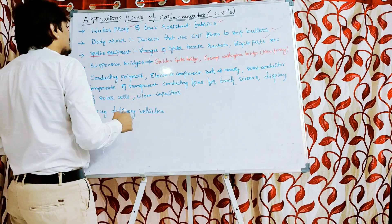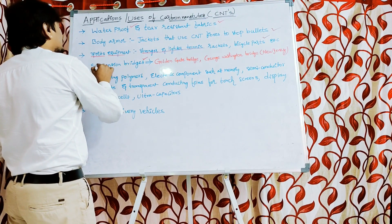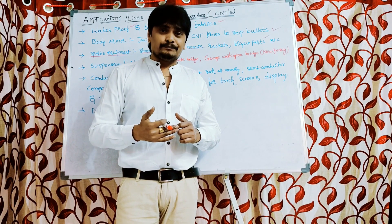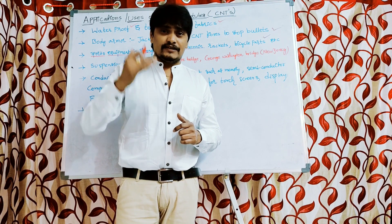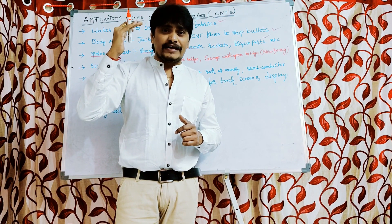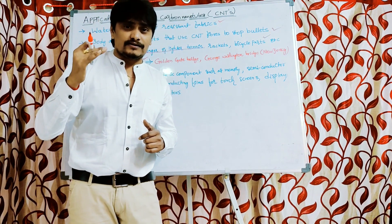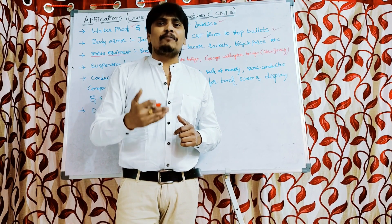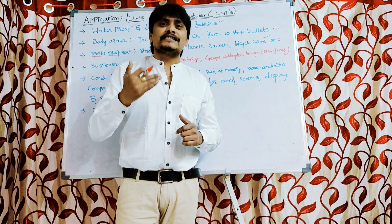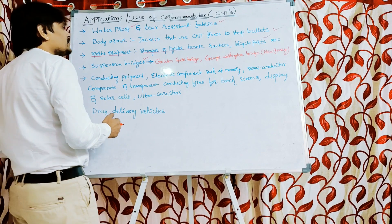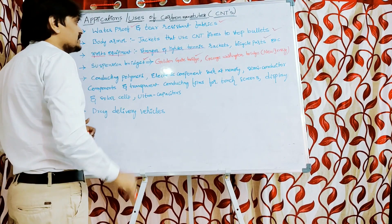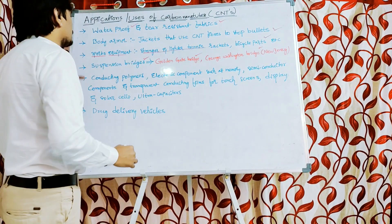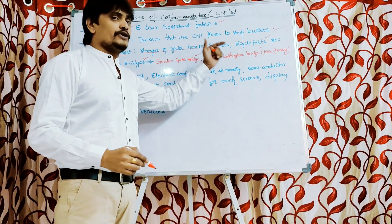Because of its greatest strength, carbon nanotubes can be used for making suspension bridges. Currently, the metal used in suspension bridges is steel, but since the Young's modulus of carbon nanotubes makes them 100 times stronger and stiffer than steel, carbon nanotubes can replace steel in suspension bridges. Examples of suspension bridges include the Golden Gate Bridge in San Francisco and the George Washington Bridge in New Jersey.